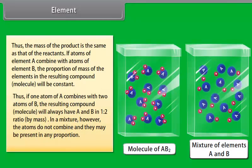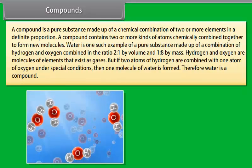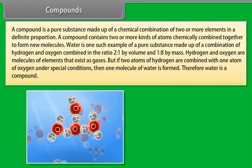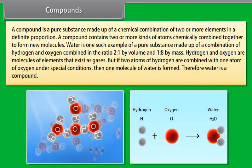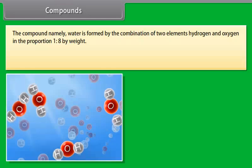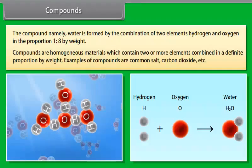An element is a simple substance which cannot be further divided into any simpler substance by ordinary chemical means. Copper, hydrogen, and iron are some examples of elements. There are about 114 elements known. Uranium is the heaviest element and hydrogen is the lightest element. One element differs from another because each has its own special kind of atoms. The figure represents atoms of element A and those of element B.